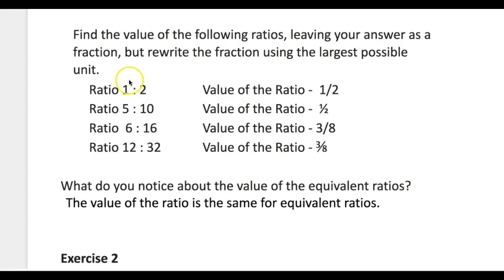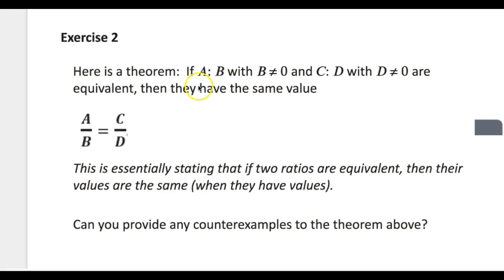Would this always be the case? Would the values of equivalent ratios always be equal? Exercise 2 starts with a theorem. A theorem is a rule that we use in math — one that has been proposed and nobody can find any counter arguments to it. They can't find a reason for it to be inaccurate. As much as people have tried, these theorems or rules have stood the test of time.